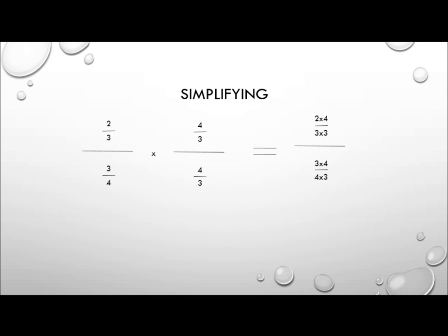And remember, whatever you do to the denominator, you must also do to the numerator. So we're now multiplying both top and bottom by 4 thirds. And this gives us 2 times 4 over 3 times 3, all divided by 3 times 4 over 4 times 3. The 3s will then cancel out. The 4s will then cancel out. And that just leaves us with 2 times 4 over 3 times 3.